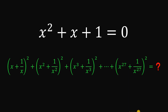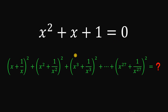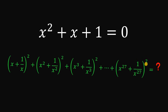Can you solve this math challenge? Here's the question. Given the equation x² + x + 1 = 0, the goal is to evaluate the expression (x + 1/x)² + (x² + 1/x²)² + (x³ + 1/x³)² all the way down to (x²⁷ + 1/x²⁷)².